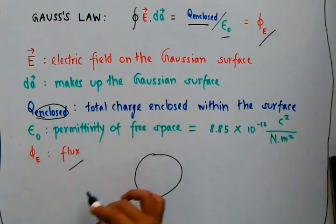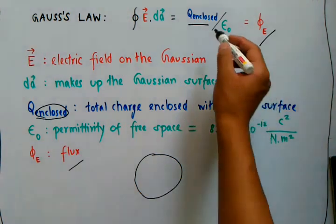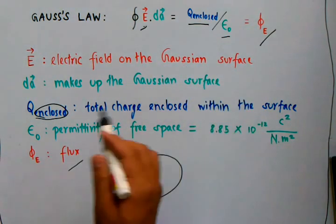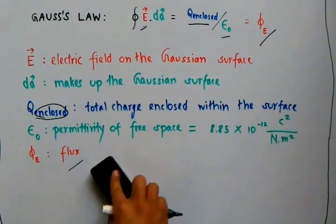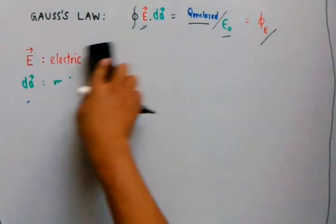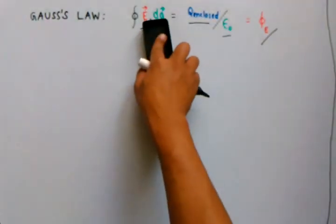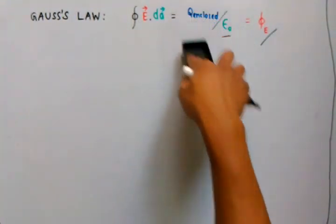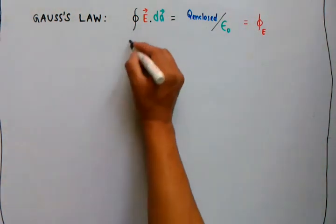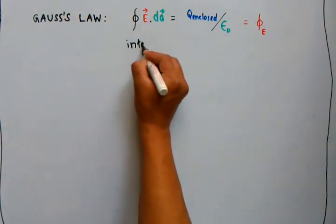we can easily calculate the electric field. Gauss's law is a very easy way to calculate the electric field given we have all the variables in the right place. This is the integral form of Gauss's law.